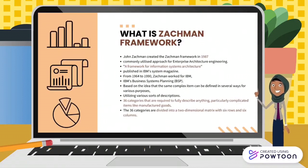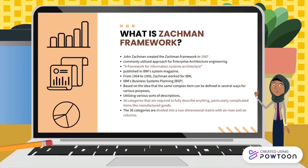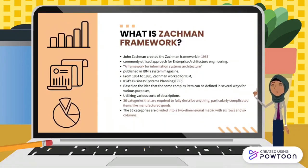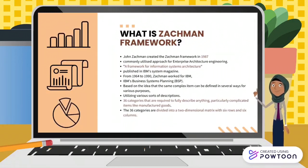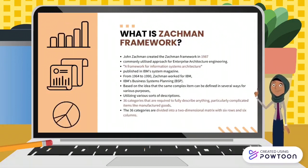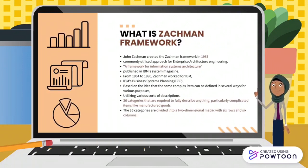There are 36 categories that are required to fully describe anything, particularly complicated items like manufactured goods. They were then divided into a two-dimensional matrix with six rows and six columns.